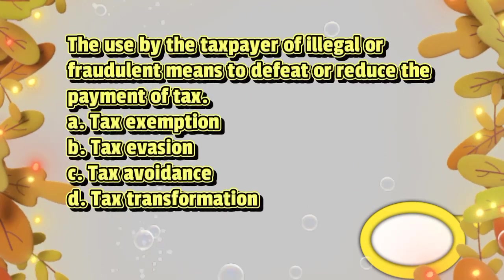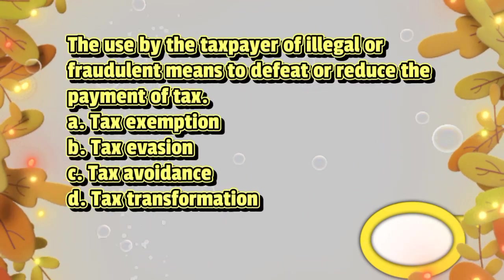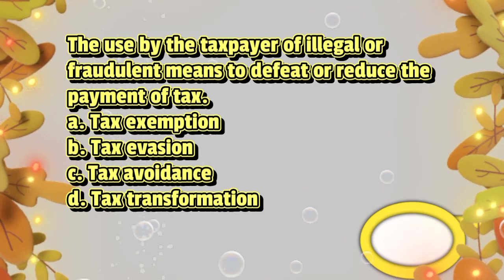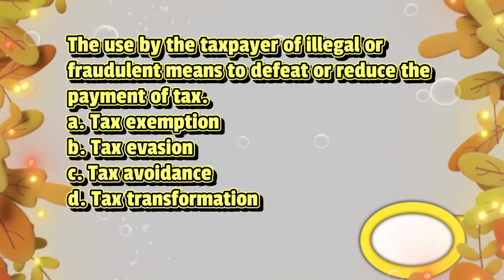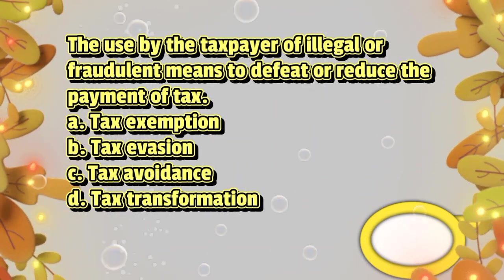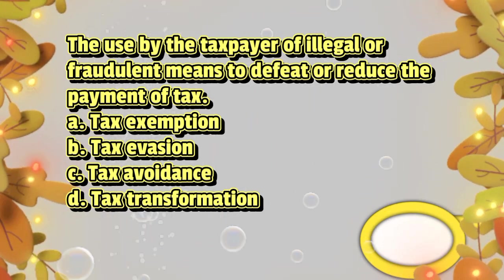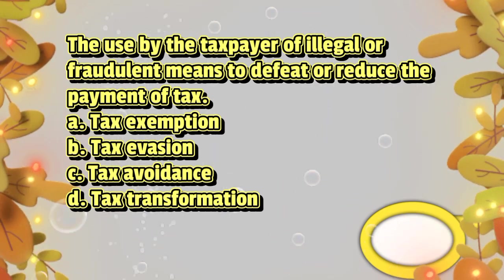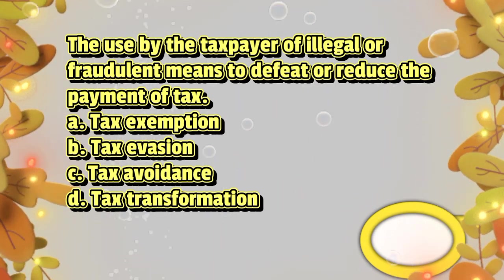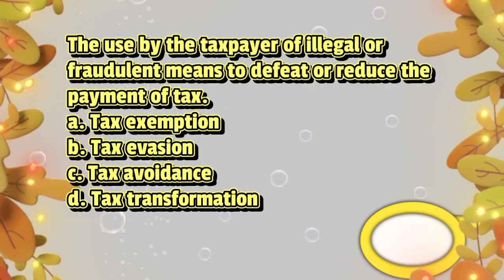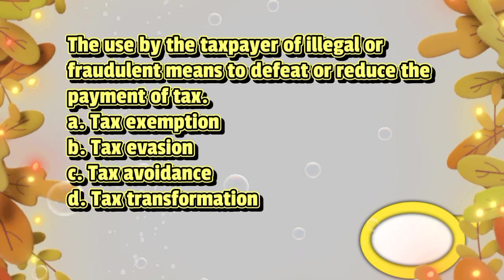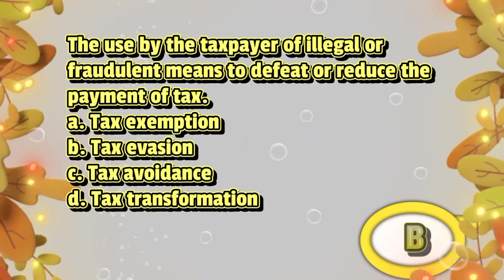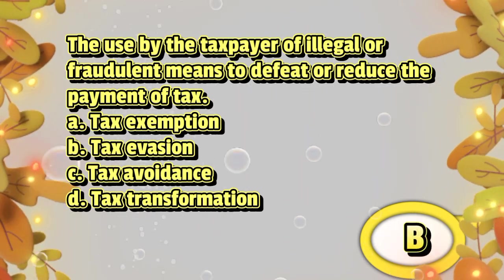The use by the taxpayer of illegal or fraudulent means to defeat or reduce the payment of tax. A. Tax exemption. B. Tax evasion. C. Tax avoidance. D. Tax transformation. The answer is letter B.